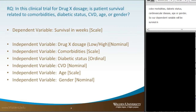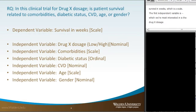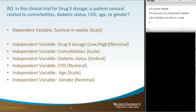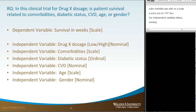The first independent variable — and the one we're most interested in — is drug X dosage, which is dichotomous: low and high dosage, a nominal variable. The second independent variable is comorbidities, measured on a scale from one to four. The third is diabetic status, which is ordinal: no diabetes, moderate diabetes, and uncontrolled diabetes. The fourth is cardiovascular disease, which is nominal — patients either have it or they do not.